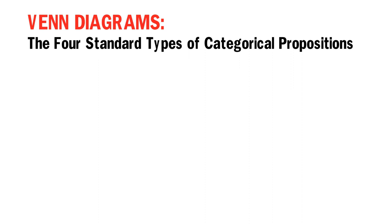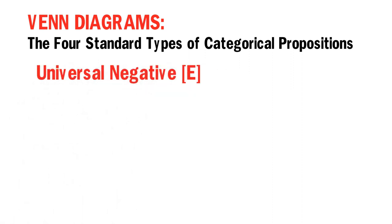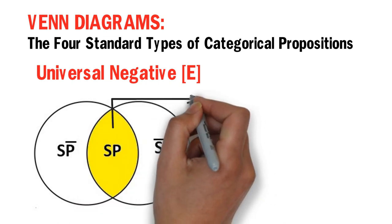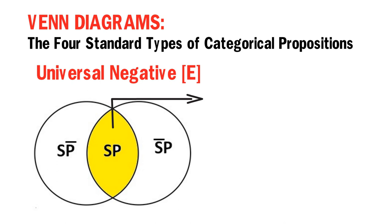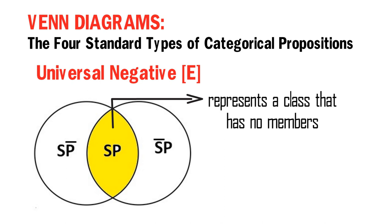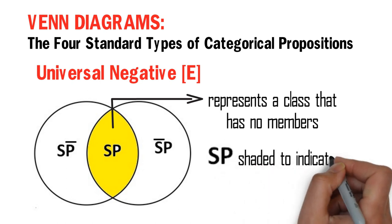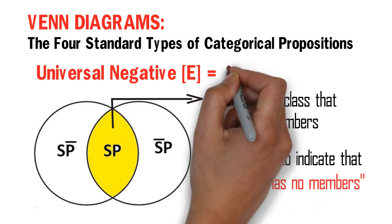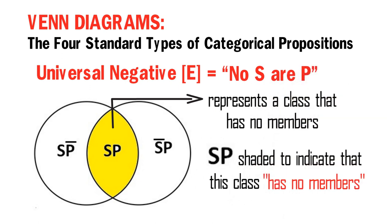Next is the Venn Diagram for Universal Negative E Propositions. The shaded area of this Venn Diagram represents a class that has no members. Thus, in the Venn Diagram for a Universal Negative E Proposition, the area 'S and P' is shaded to indicate that this class has no members. Thus, we say: no S are P.